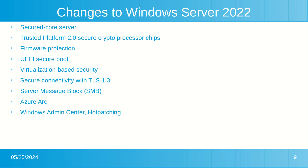There are several platform improvements for Windows containers, including application compatibility and the Windows container experience using Kubernetes. A major improvement includes reducing the Windows container image size by up to 40 percent, which can lead to a 30 percent faster startup time and better performance.